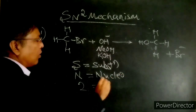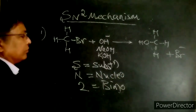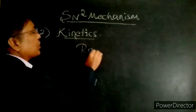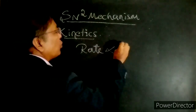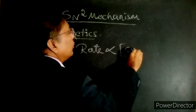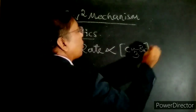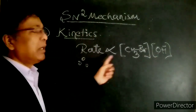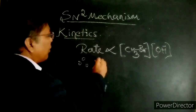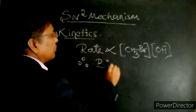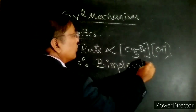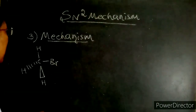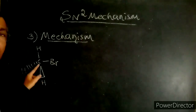Second point — kinetics. The kinetic studies show that the rate of the reaction is directly proportional to the concentration of methyl bromide and the concentration of the nucleophile. Therefore, as the rate depends upon both molecules, it is a bimolecular reaction.